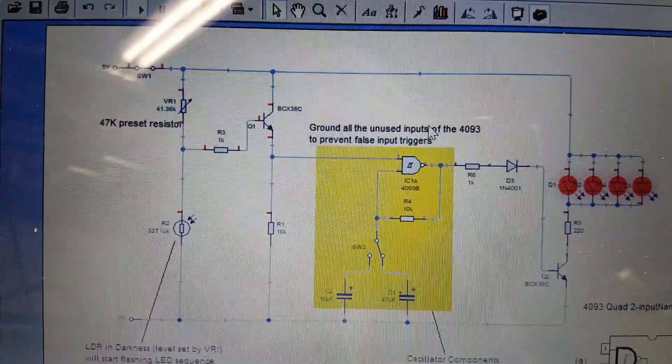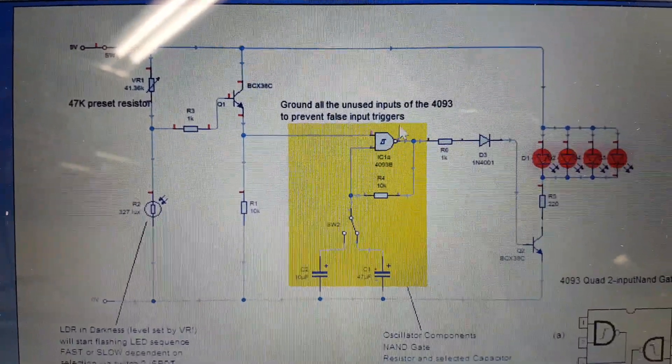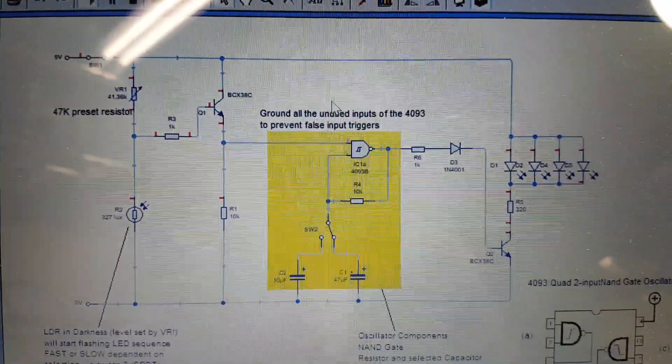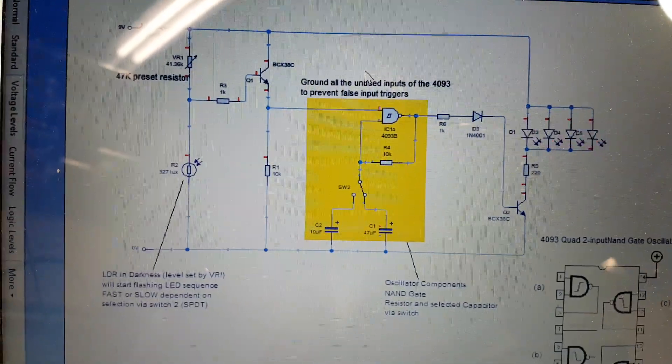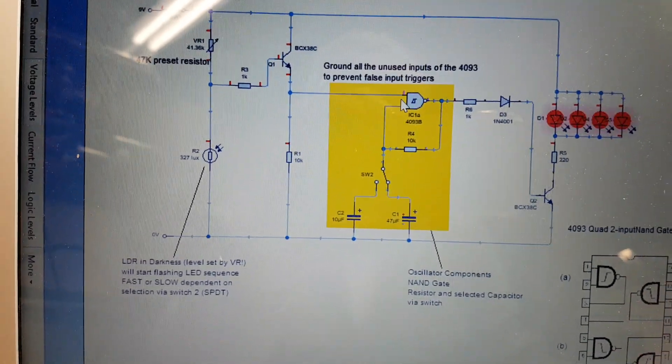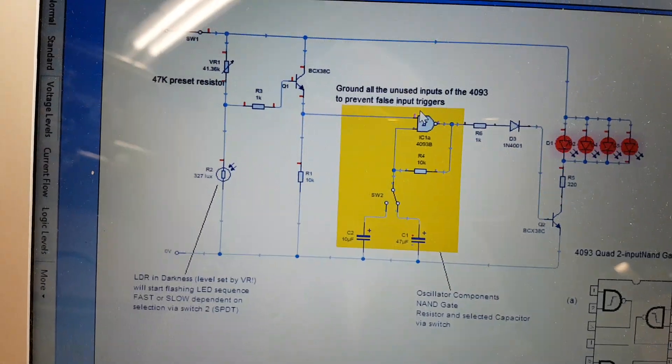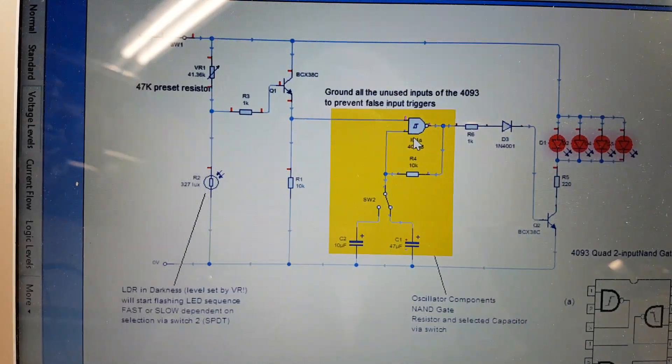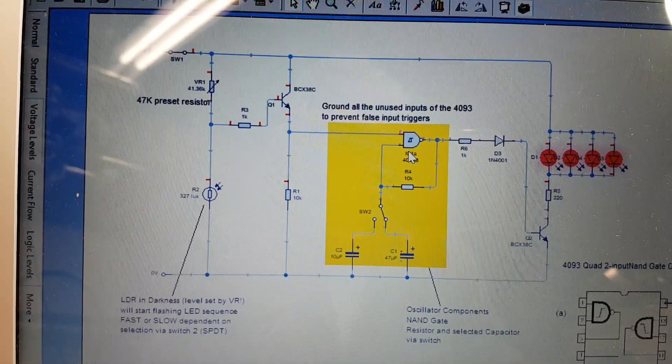By the way, all the other unused inputs on the Quad 2 input NAND gate ideally want to be either held high or low. I've held them low, and the reason for that is it just stops any false triggers. Sometimes what can happen is you get little spikes and things just finding their way onto an input and it might affect another input. So it's good sense that any unused input gates on a logic gate you either ground them low or you send them high permanently.